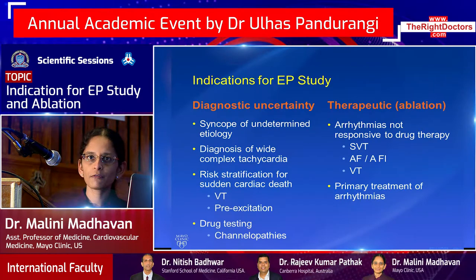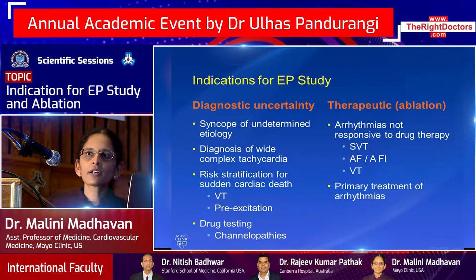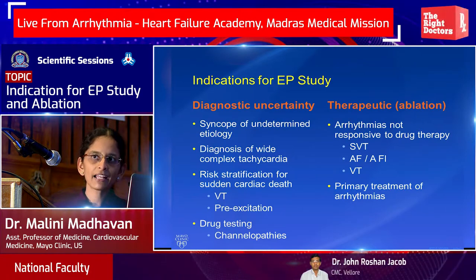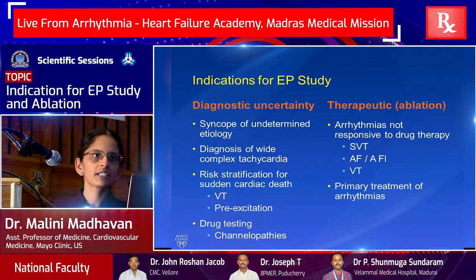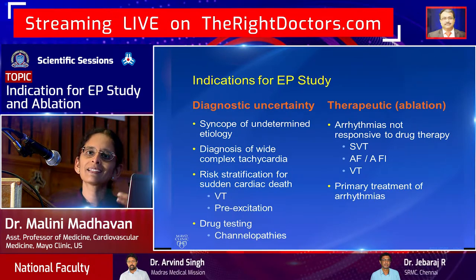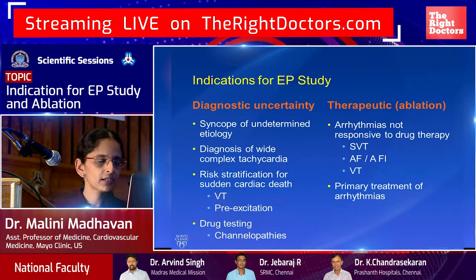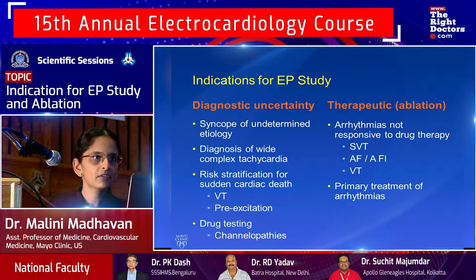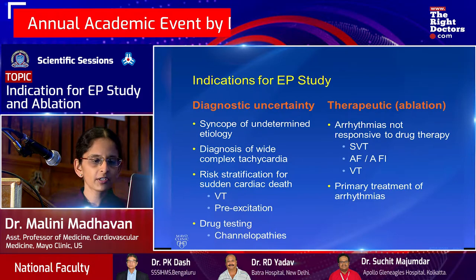Another indication for EP study is wide complex tachycardia where you're unsure of the differential diagnosis from the ECG alone. Or if a patient has a clearly identified pathway and you're unsure if it's high risk — is there risk for sudden death with pre-excitation on ECG? The second broad reason is if there is going to be therapeutic benefit, meaning indications for ablation in patients with arrhythmias.